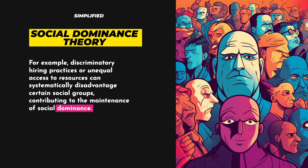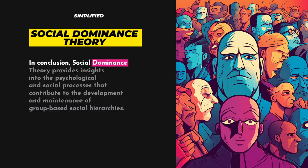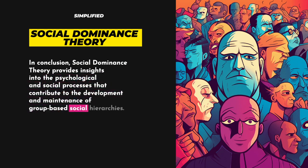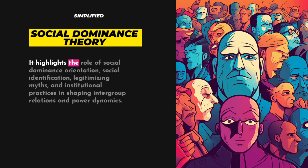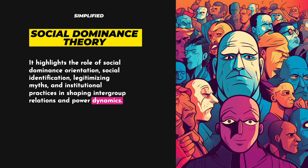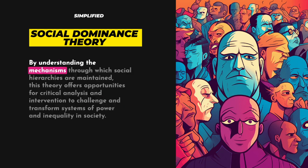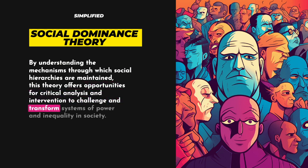In conclusion, Social Dominance Theory provides insights into the psychological and social processes that contribute to the development and maintenance of group-based social hierarchies. It highlights the role of social dominance orientation, social identification, legitimizing myths, and institutional practices in shaping intergroup relations and power dynamics. By understanding the mechanisms through which social hierarchies are maintained, this theory offers opportunities for critical analysis and intervention to challenge and transform systems of power and inequality in society.